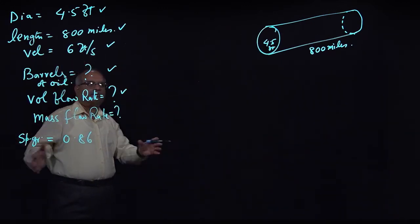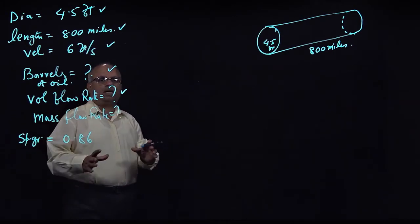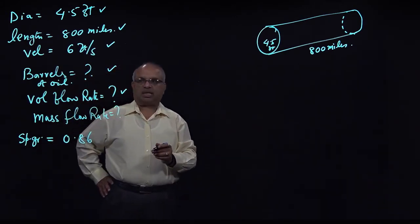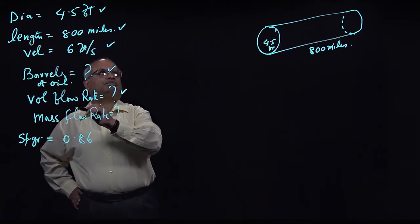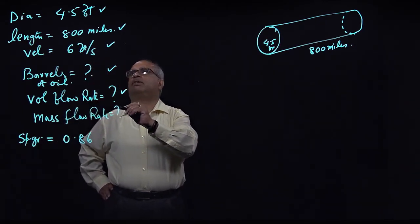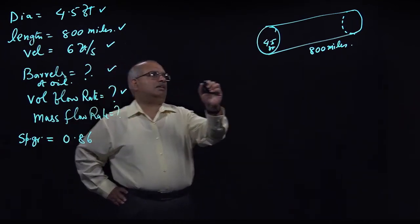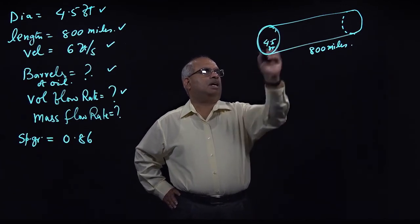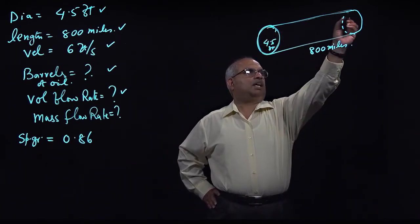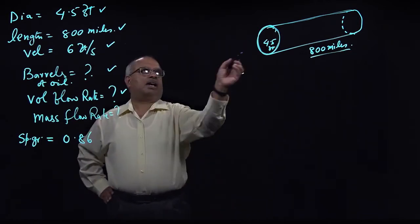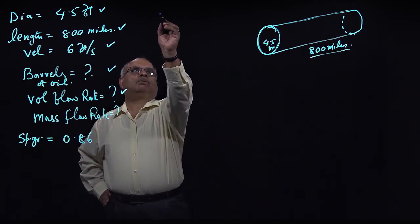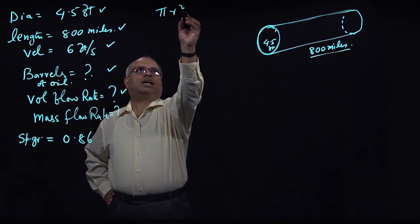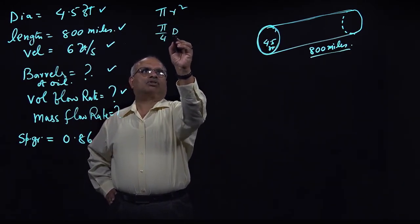Because the oil is flowing through the pipeline, it acts like a storage bin for us. So let's calculate first the volumetric flow rate. Volumetric flow rate is calculated by knowing the area of the pipe, and we know the length of the pipe is 800 miles.